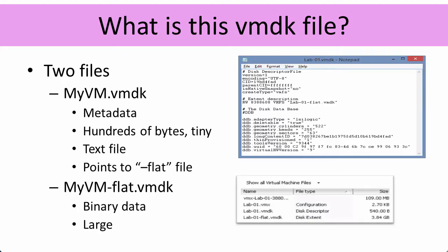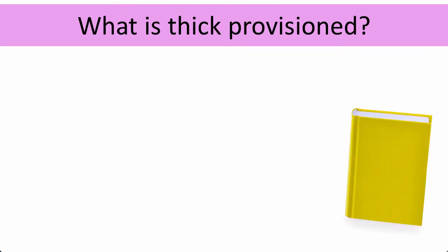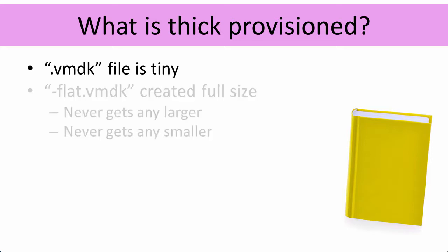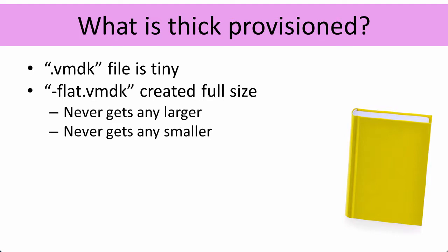The flat file is however big the hard drive is on the virtual machine. With a thick provisioned VMDK, the VMDK file itself is tiny. We typically talk about a VMDK file even though it is actually these two files — the VMDK and the flat file — and we'll talk about it as if it's one file. In the datastore browser, the vSphere client will hide the fact that there are actually two files there.